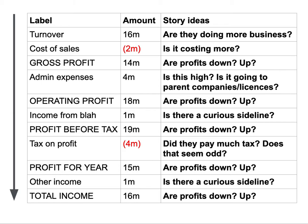For each of these lines you can take the current year's amount and subtract the previous year's amount to calculate a change. You can also divide that change by the previous year's amount to give yourself a percentage change, and that allows you to tell a story about how much something is changing in that business — whether the business has increased or decreased by a certain proportion, or how much the tax they're paying has changed.